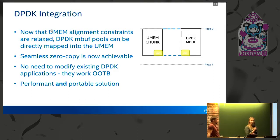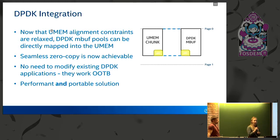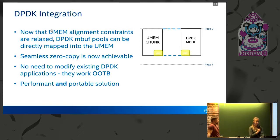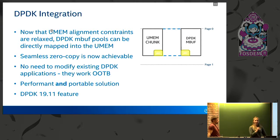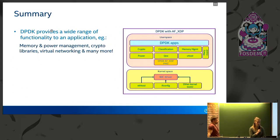In terms of performance, this solution gives a 60% improvement over copy mode and a further 24% improvement upon the first-generation zero-copy solution in 19.08 that used the external mbuf feature. This is a pretty significant performance improvement. The feature is available in DPDK 19.11, the most recent DPDK release. Provided you have kernel 5.4, this feature will be available; otherwise DPDK will simply fall back to copy mode.